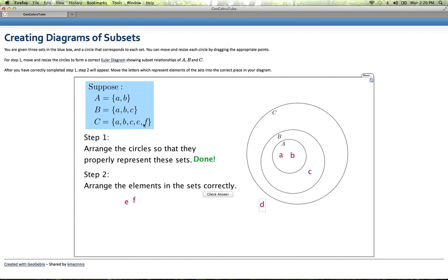Then I have e and f that are in set C, but not in A or B. So I can put these in this outermost part. Click check answer, and I've got that done correctly.